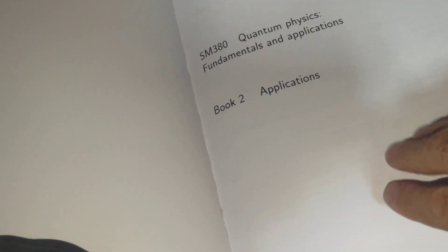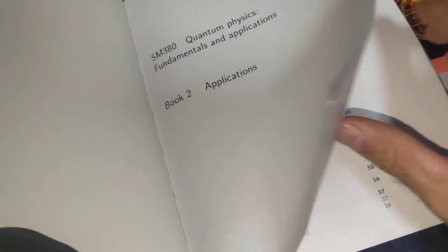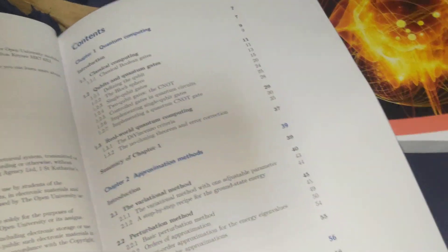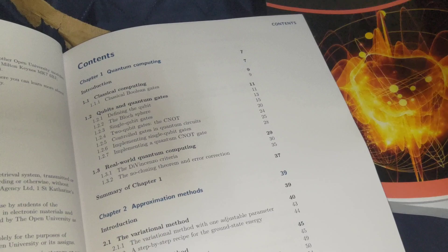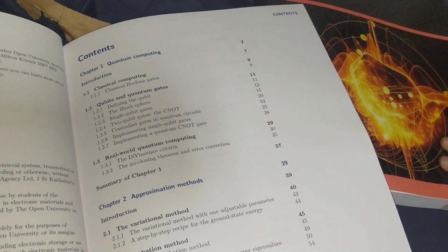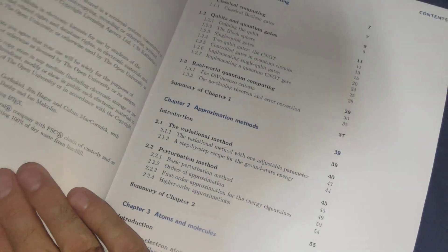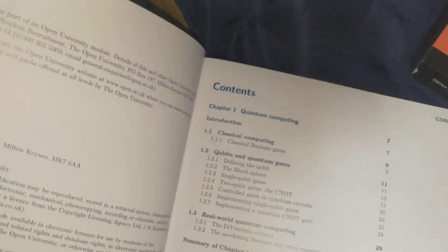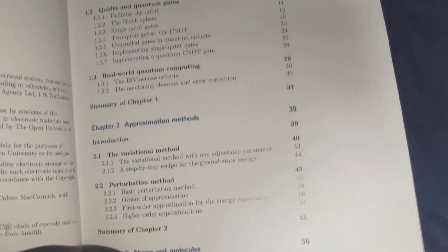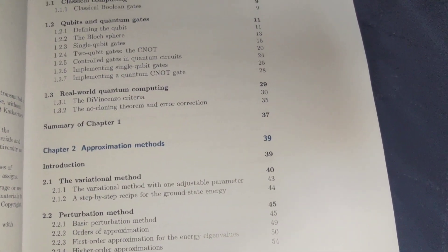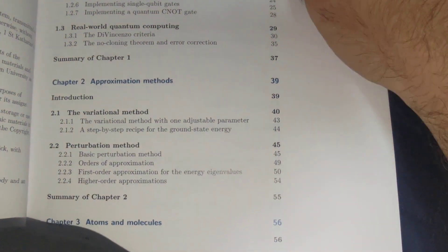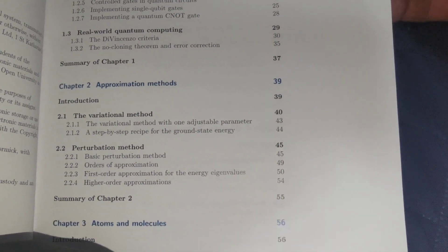So this second textbook is really applied quantum mechanics. We have classical computing, qubits and quantum gates, real world quantum computing. Approximate, be careful my boy. How many pages? I'll tell you in a second, that's a good question. Approximation methods, the variation method, perturbation method, reminds me of solving non-linear equations, we use perturbation methods.